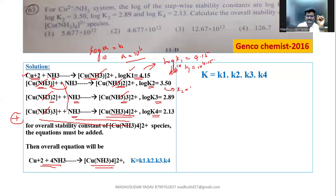What is the K2 value? It is 10 power 3.50. What is K3 value? 10 power 2.89. What is this value? K4 will be 10 power 2.13.